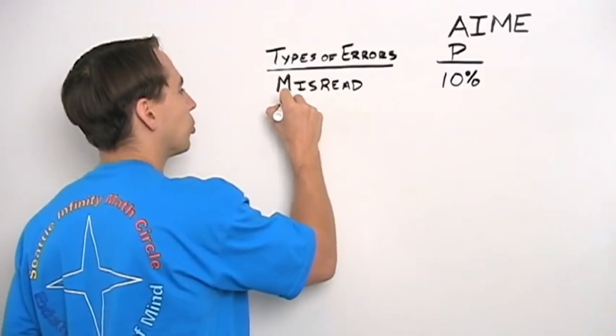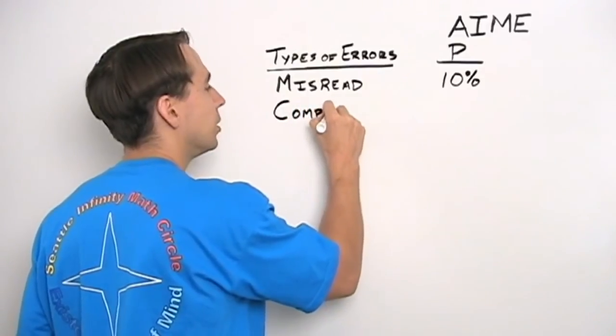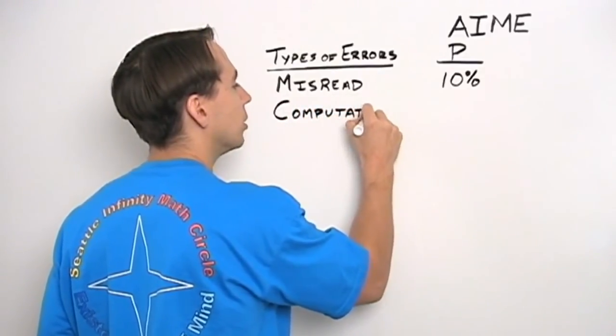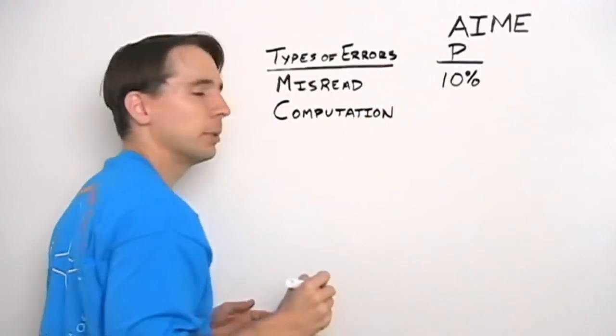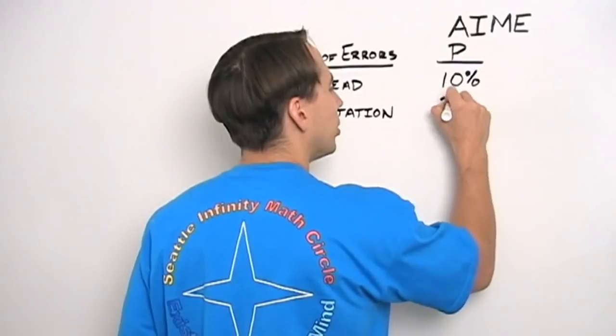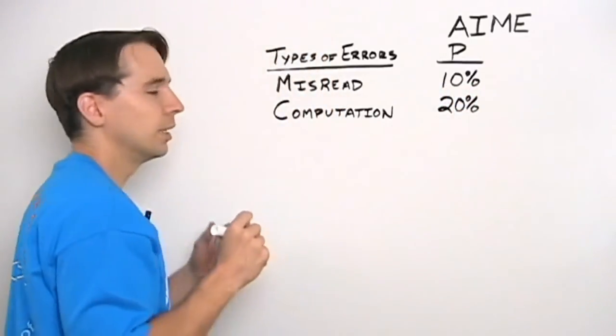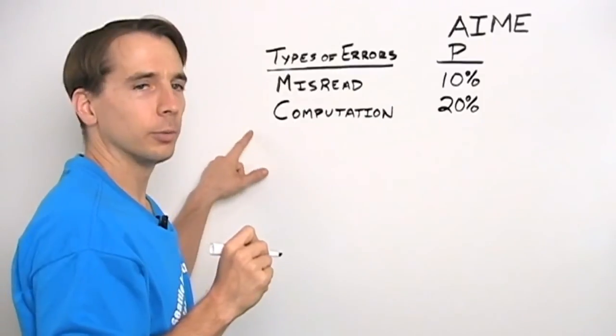And some of the problems require a little computation at the end, a little multiplication. They don't allow calculators, which is a good thing. And sometimes I make computation error, which is a bad thing. And well the probability I'm going to do that is usually around twenty percent. And you're probably familiar with this error too.